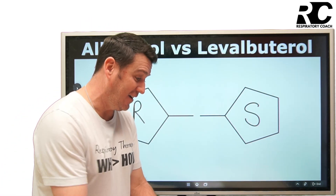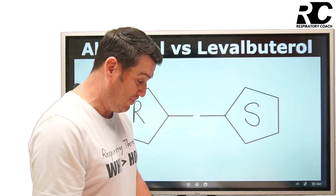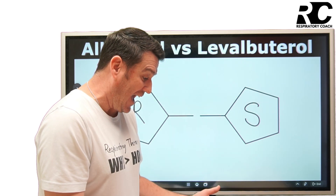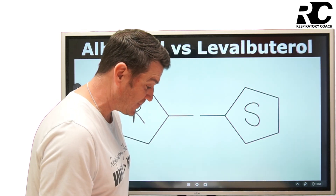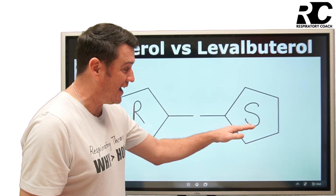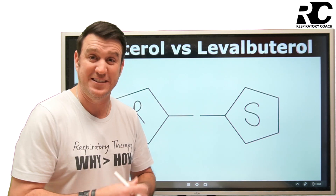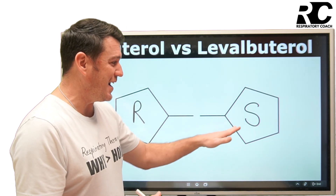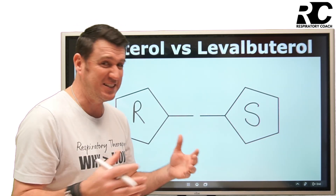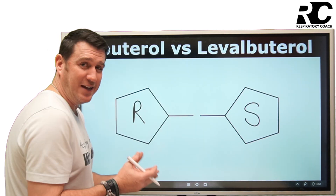Egan's actually says it right here on page 724, chapter 36, 13th edition. It basically says, although the S isomer is physiologically inactive on adrenergic receptors, there's evidence that it's not completely inactive. When you think of S, think of sinister — it's bad. We don't like this portion of the formula. The S isomer is essentially the bad guy and the R isomer is the good guy.